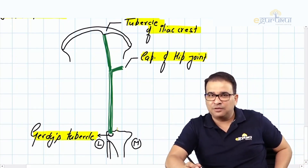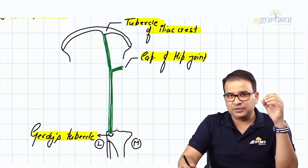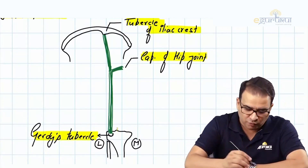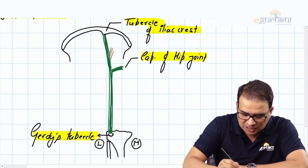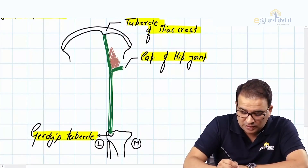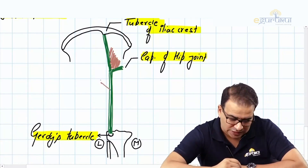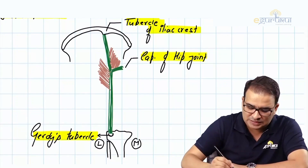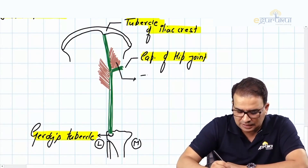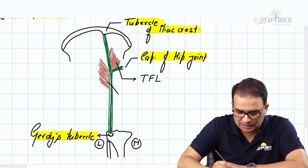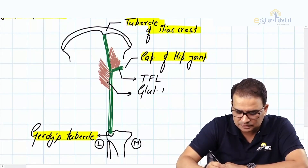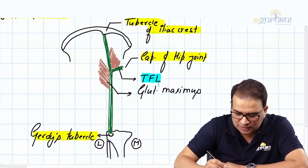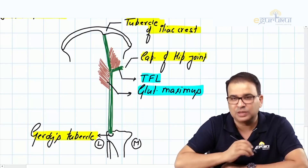The iliotibial band is a very thick band on the lateral side of the thigh. It provides insertion to two important gluteal muscles: the tensor fascia lata (TFL) and the gluteus maximus — the largest muscle of the human body. So, the muscles inserted into the iliotibial band are tensor fascia lata and gluteus maximus — a commonly asked question.